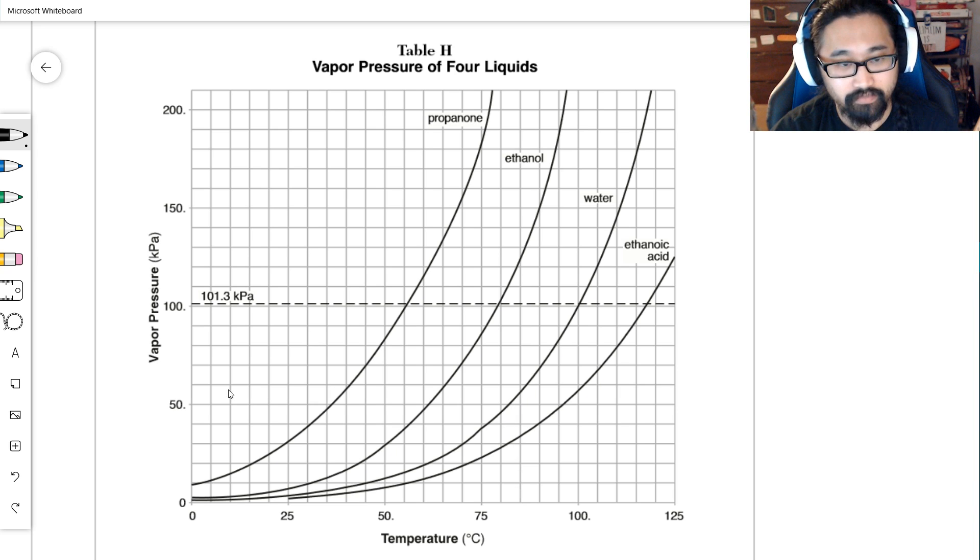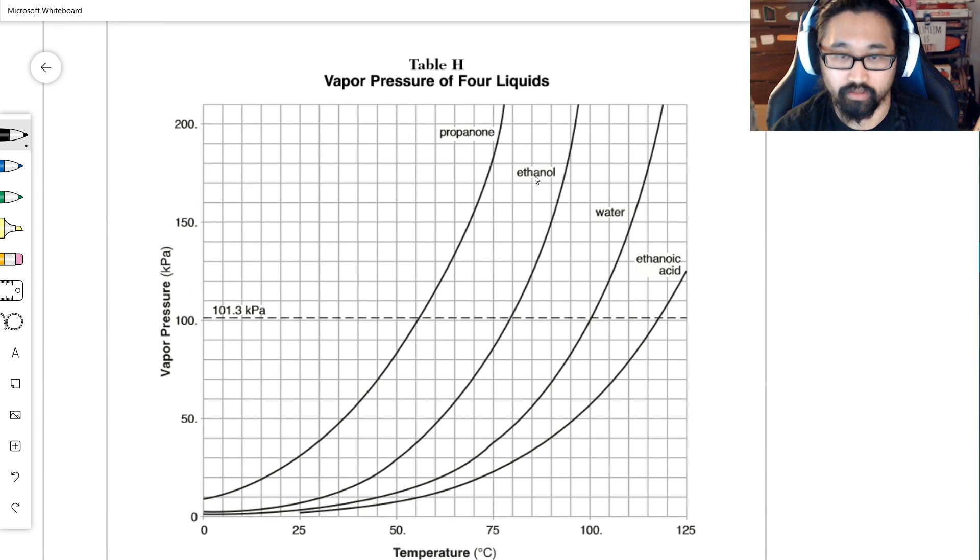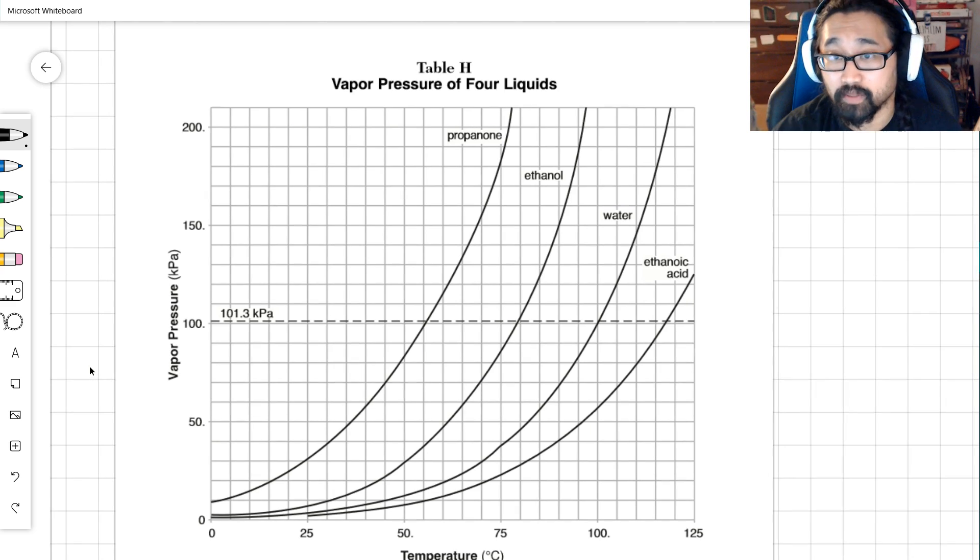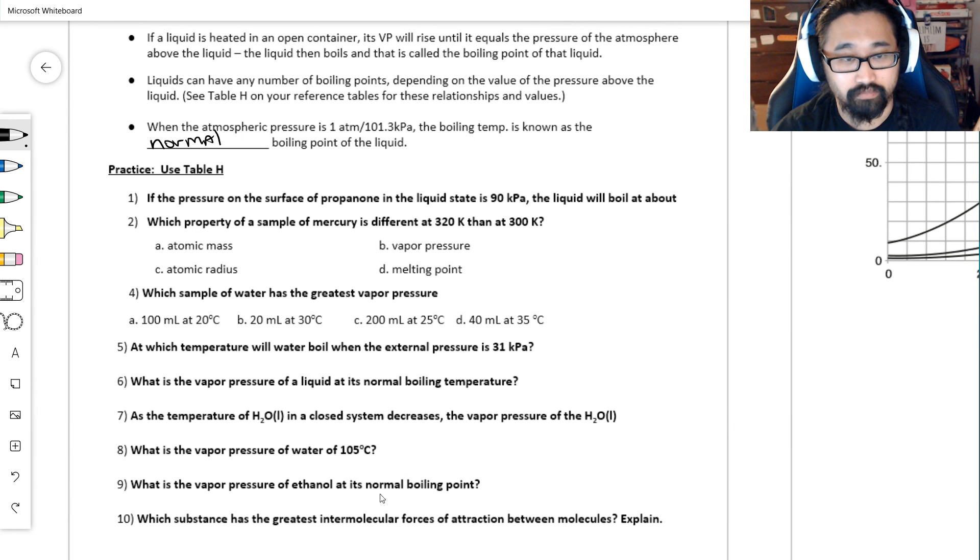If you know the pressure, you can go over to the substance that you're worried about and find out what temperature it will boil at. If you double the pressure, if I bring it all the way up to about 200, water won't boil until about 117 to 118 degrees Celsius. Each of these little boxes is five. This is not always super useful, but it's something you could be asked about. They might ask you about the pressure of propanone or ethanol or water or ethanoic acid. I just want you to know where to look. If you're asked about the vapor pressure of a liquid, it's going to be here on Table H.